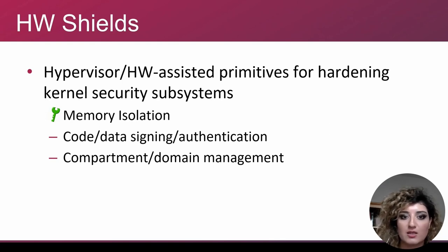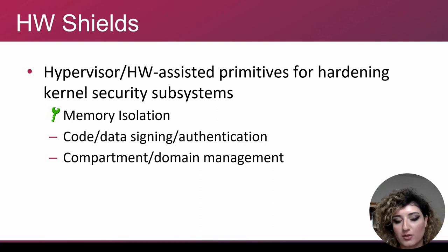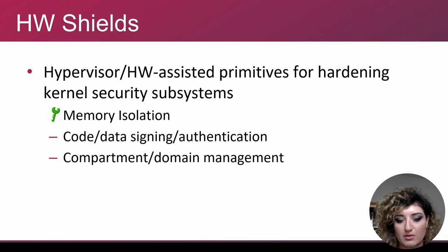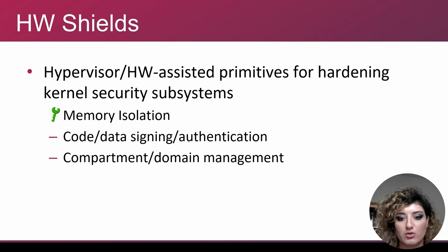When virtualization-based security is not efficient enough, and we have better hardware like finer-grain protection such as CHERI, or memory tagging features like MTE, or PAC for pointer authentication, we can switch to enforcing the actual isolation through those features. This way we can have a scalable and more practical solution that finds the right balance between performance and security. The main primitives in common are: memory isolation provided by both approaches, code and data signing and authentication, and the concept of a compartment as a domain of isolated execution.